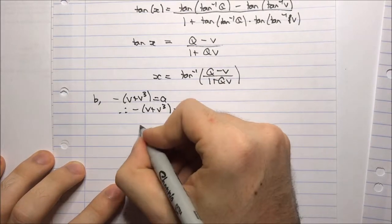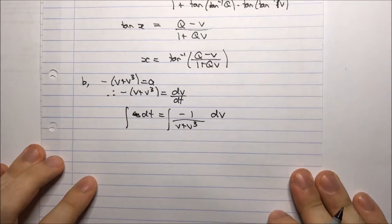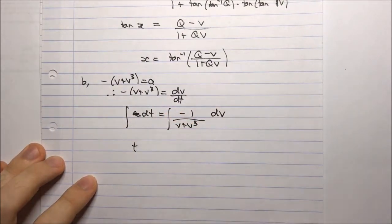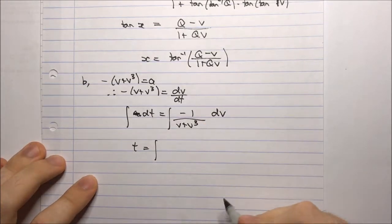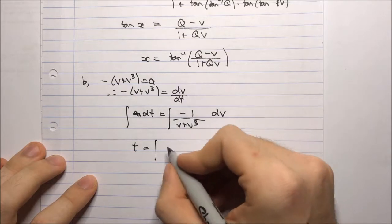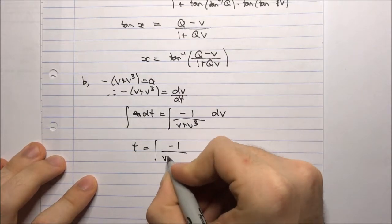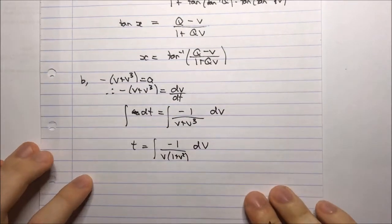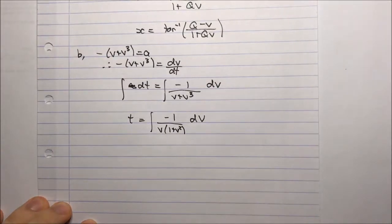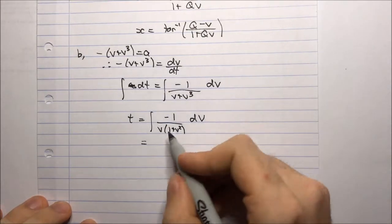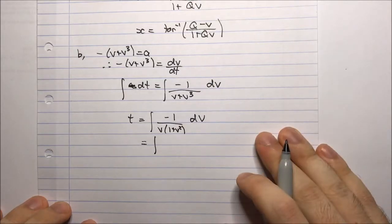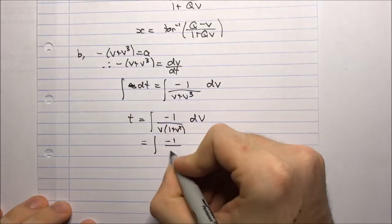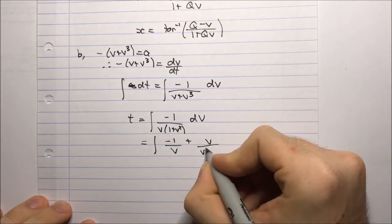Integrating both sides: the left side gives t. The right side requires partial fractions, since we have negative 1 over v(1 plus v squared) dv. Decomposing into partial fractions gives negative 1 over v plus v over (v squared plus 1). We can verify by combining over a common denominator: negative v squared minus 1 plus v squared equals negative 1, which checks out.